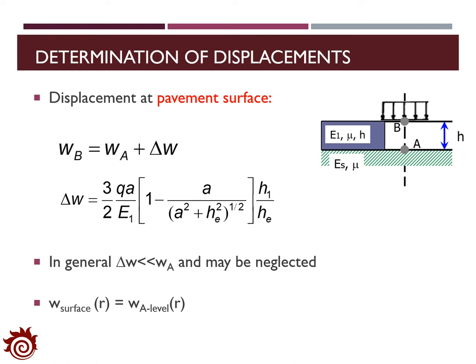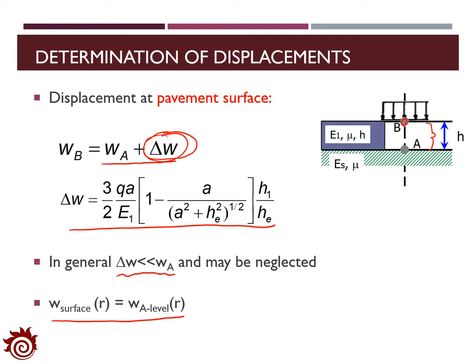The Odemark approach also provides a formula for us to estimate the deflection at the surface of the pavement. We can estimate the deflection at point B, which is located on the center line of the contact area. The deflection at point B equals the deflection at point A plus the deflection in the upper layer, Delta Omega. If you compare this formula with the equation for Omega A, you can see that for most cases, Delta Omega is much smaller than Omega A. In that sense, we can ignore the additional deflection and assume that the deflection on the surface of the pavement is almost the same as the deflection at point A.